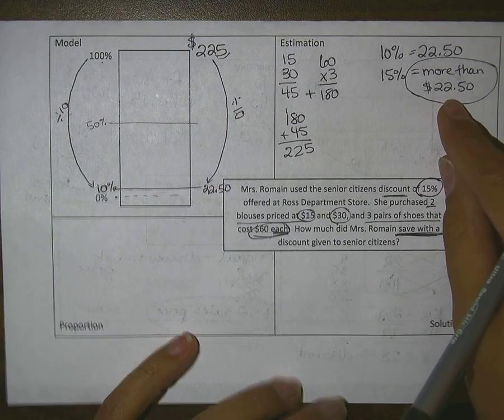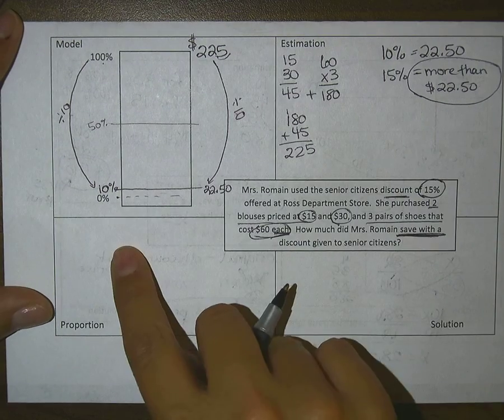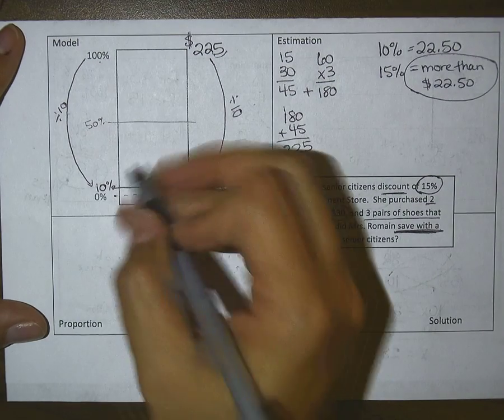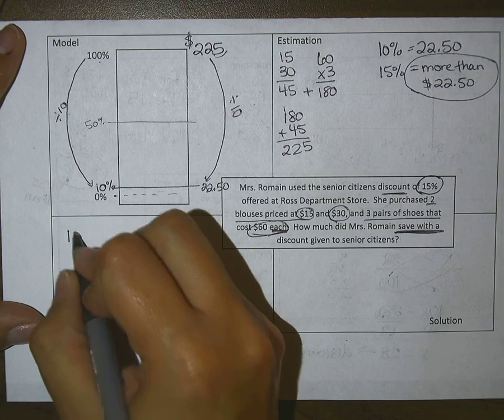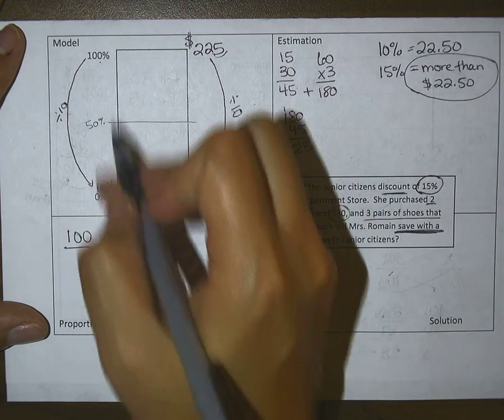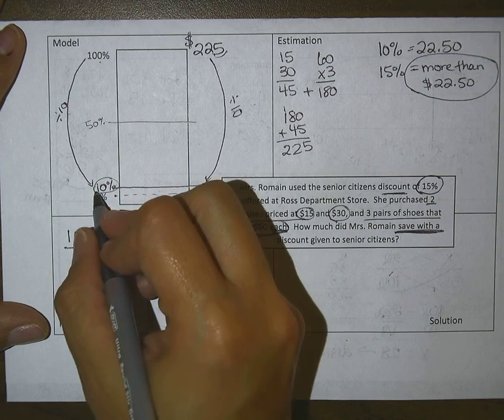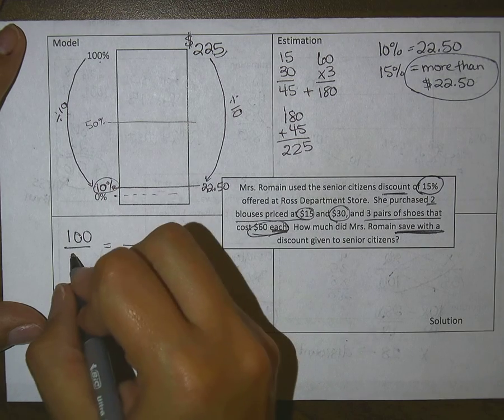This would be a good estimated answer: I'm going to be saving more than $22.50. Now I can go ahead and start to solve. Remember, the percent bar helps me to set up my proportion. I'm not looking for 10%, I'm actually looking for 15%, so I put that 15 down there. $225 is my total, and the amount of that 15% is my unknown.